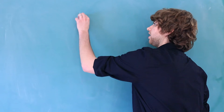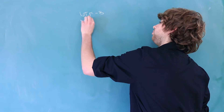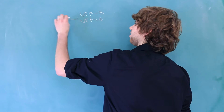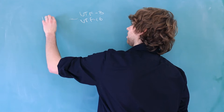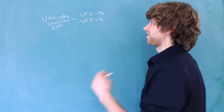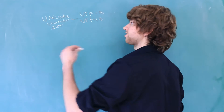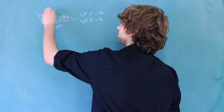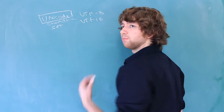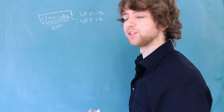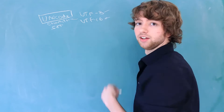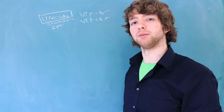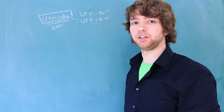I've mentioned before that UTF-8 and UTF-16 are examples of encodings for the Unicode character set, but it's not quite that simple. We don't just have a character set called Unicode. There are a couple of different options that use UTF-8 or UTF-16, and that is what we are going to be talking about in this video.